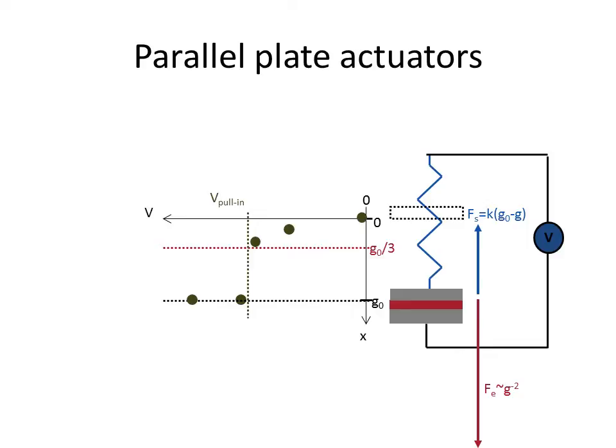Now I can even further increase my electrostatic potential and of course my electric field here will even further increase but nothing will happen anymore. The spring force will be constant and of course the contact force between the two electrodes will increase, they will be pressed together harder, but nothing moves anymore.